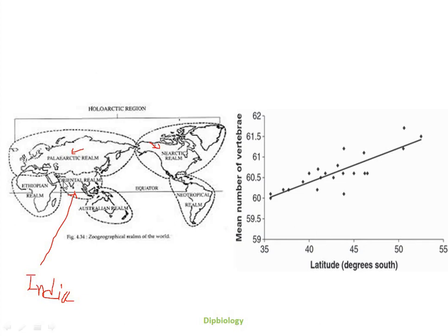Four realms — the Ethiopian, Oriental, and Neotropical realms — are situated near the equatorial zones and remain warm and humid. On the other hand, the two other realms, the Palearctic and Nearctic realms, are present far from the equatorial zones and towards the polar regions, and remain cold.